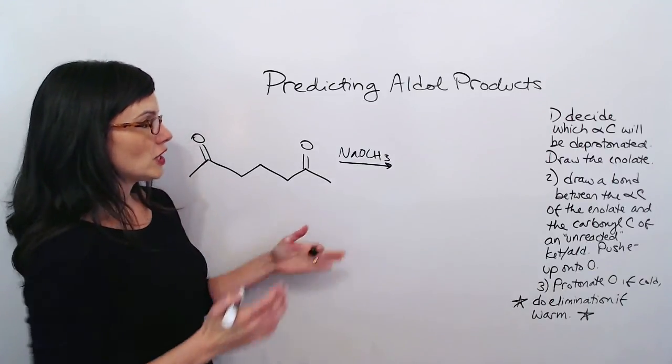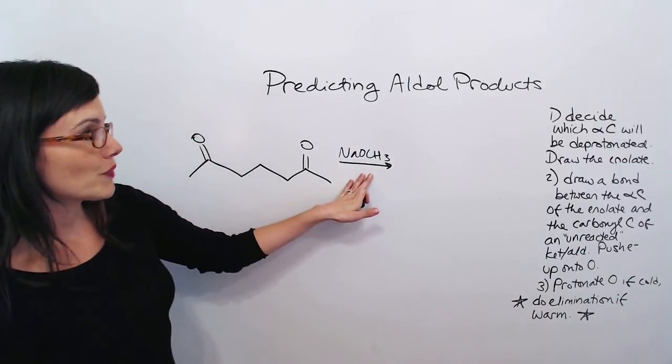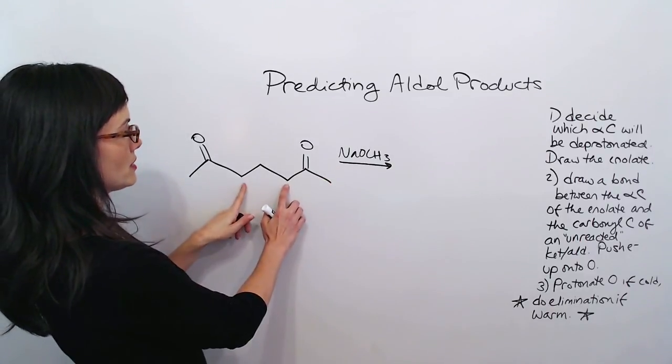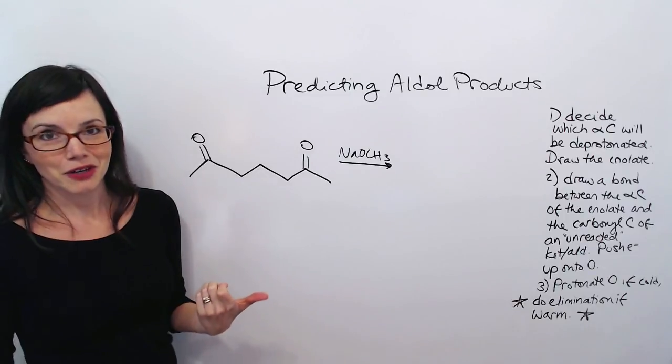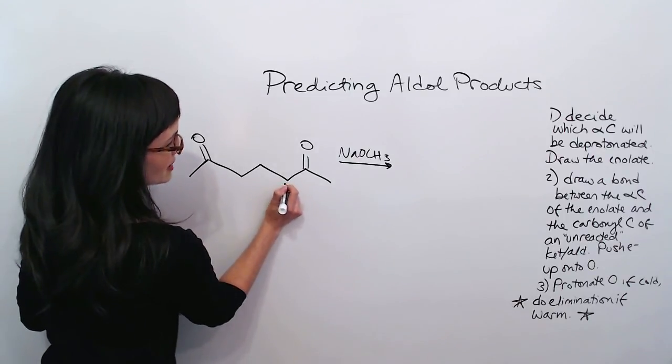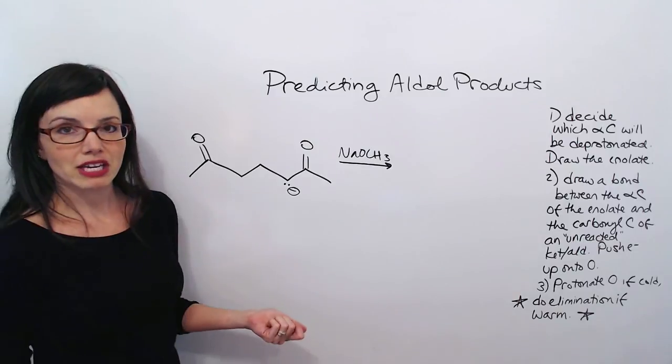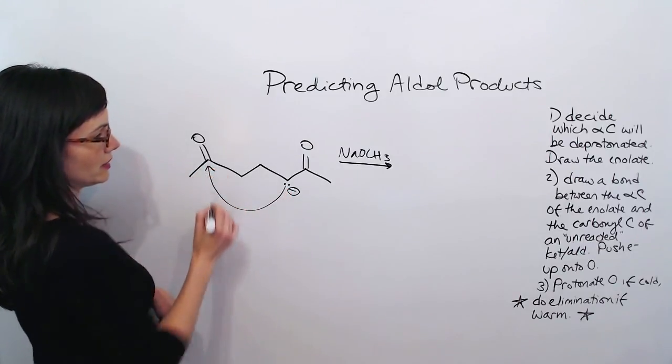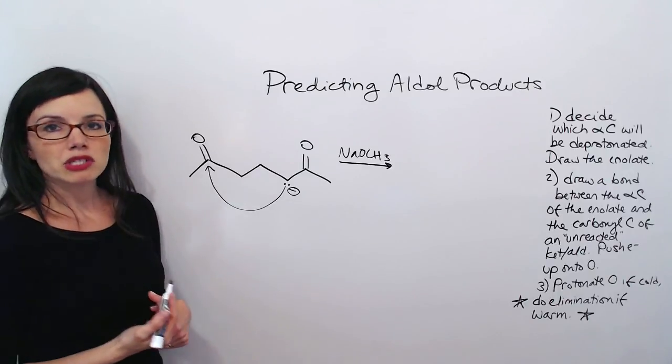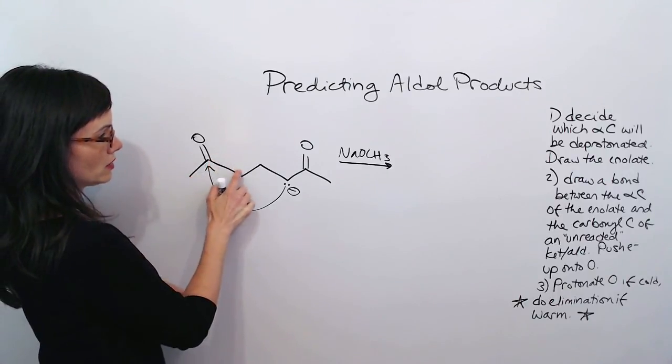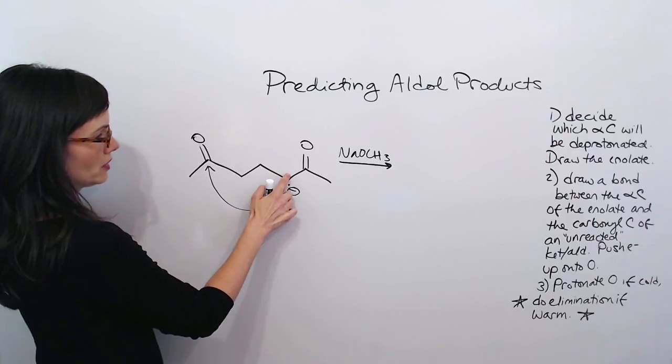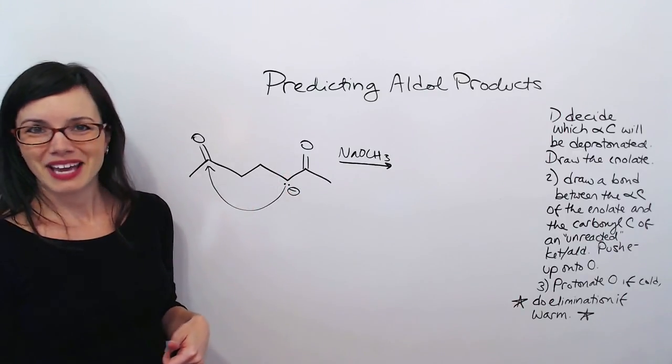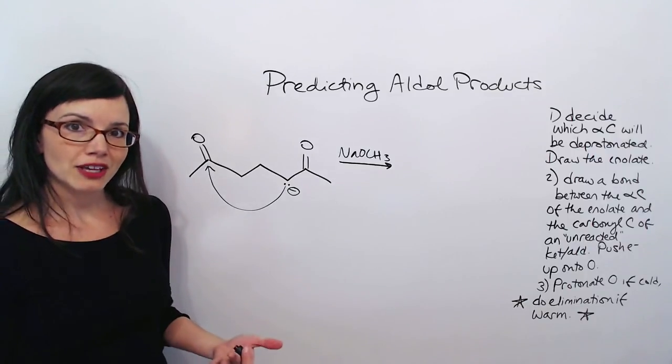So, if we followed our original rule that this type of base is going to choose one of these more substituted alpha carbons. And we, let's say, made this one our alpha carbon of the enolate. And we let it attack right here. How many members is this ring going to have? One, two, three, four. A four-membered ring. That's not okay. Especially when we have other options available.